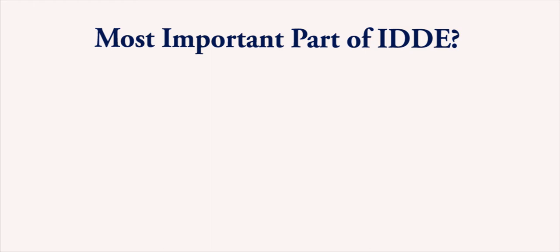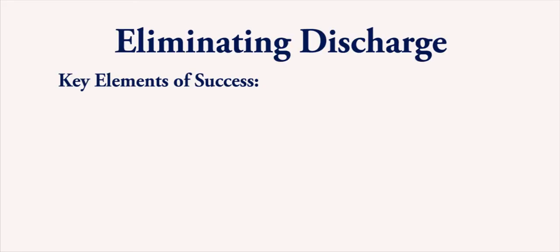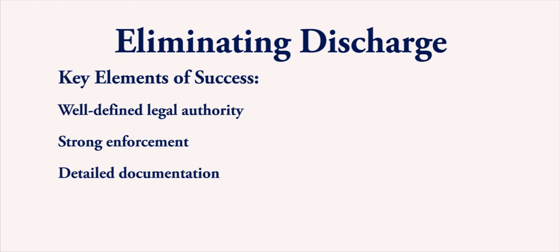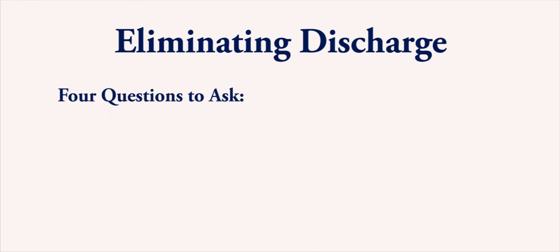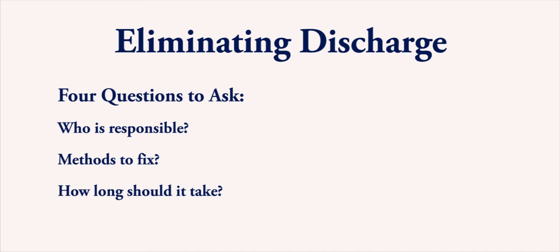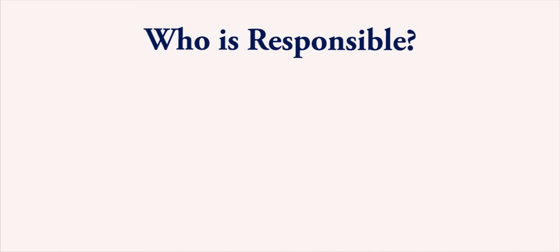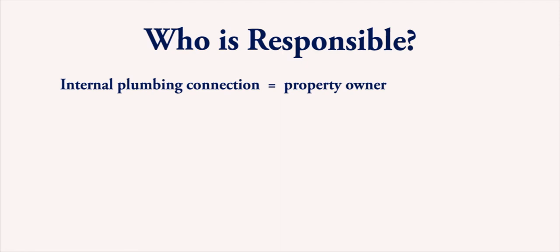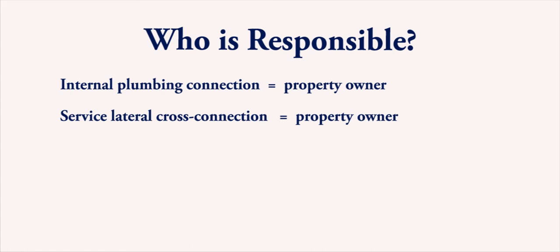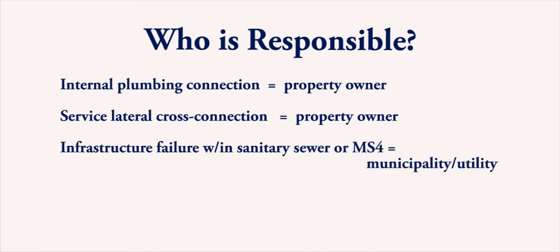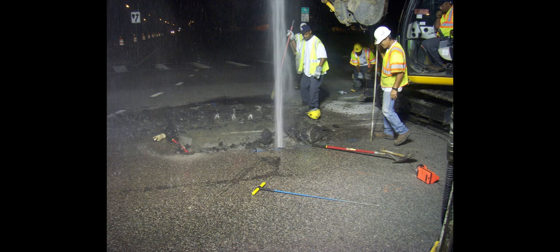Now we will discuss the most important part of illicit discharge detection and elimination: actually eliminating the discharge. Key elements of success include a well-defined legal authority, strong enforcement, detailed documentation, and follow-up measures. Four questions to ask include: who is responsible, what methods should be used to fix the discharge, how long should it take, and how is removal or correction confirmed. Generally, if the illicit discharge is from an internal plumbing connection or a service lateral cross connection, the property owner is responsible for fixing the discharge. But if there is an infrastructure failure within the sanitary sewer or MS4 storm drain network, the municipality or utility is responsible.